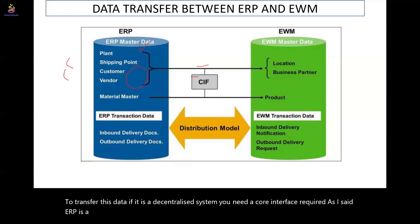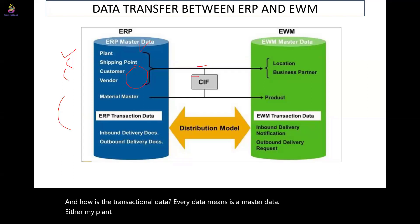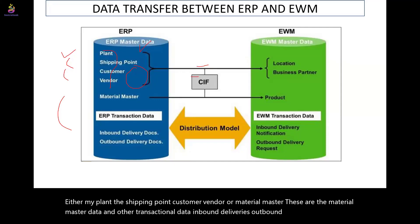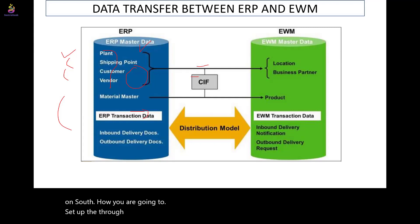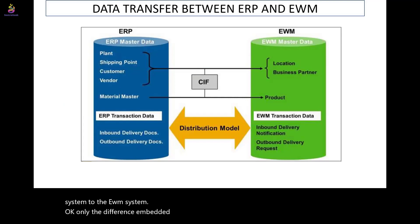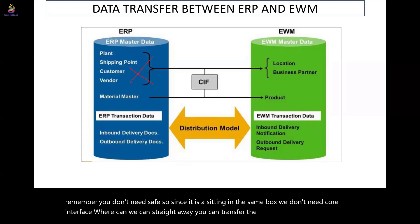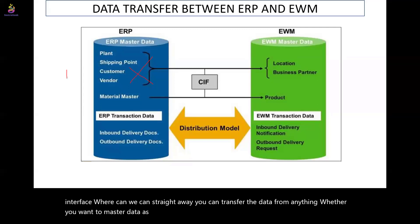In a decentralized system, ERP is a separate box and EWM is a separate box. Transactional data — such as master data (plant, shipping point, customer, vendor, material master) and transactional data (inbound and outbound deliveries) — is distributed from the ERP or S4 system to EWM through a distribution model. In an embedded system, you do not need CIF since everything sits in the same box and data can be transferred directly.